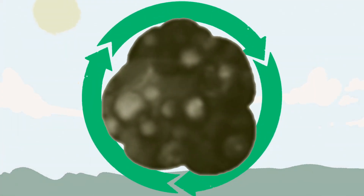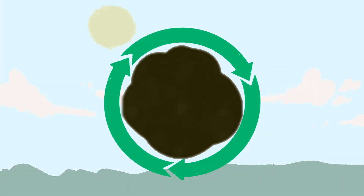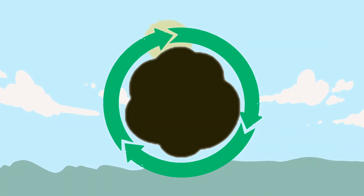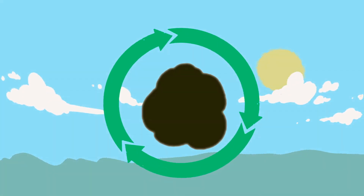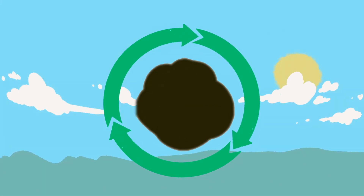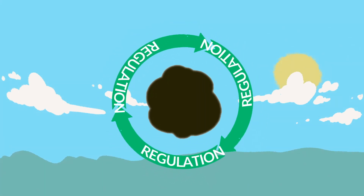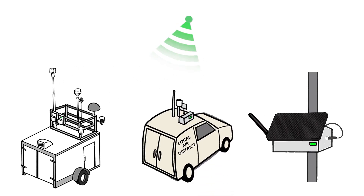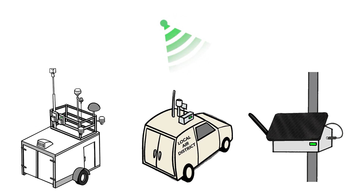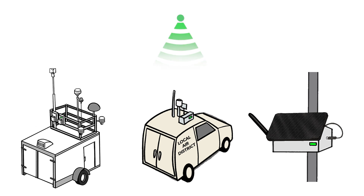Air quality agencies work to improve and develop more accurate inventories. This takes the form of scientific research, changes to the reporting requirements of emission sources, and updates with the best available data or methods. As the quality of our emissions data improves, air quality agencies can develop more accurate inventories. These inventories can be used to address air quality issues and inform emissions reductions opportunities in the state.